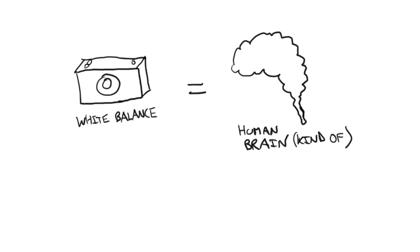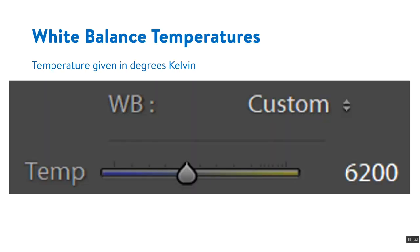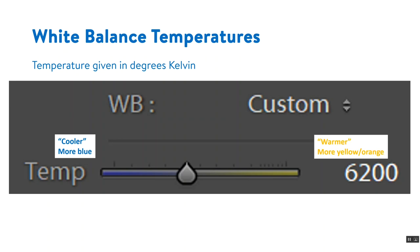Let's get into the technical details about white balance, and it all starts with the temperature. The white balance temperature is given in degrees Kelvin, and basically it's a scale. The lower the number, the cooler, or more blue, the compensation that is used on your photo. The higher the number, the warmer, or the more yellow or orange compensation is used.